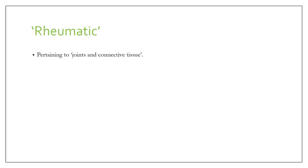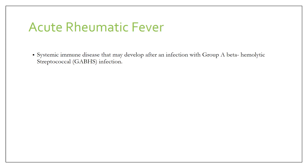The word 'rheumatic' is something which is related to joints and connective tissue — that you must be very clear — that is why the field of rheumatology uses that term. It is a systemic disorder, it is an immunologically mediated disease, and it occurs after an infection with group A beta-hemolytic streptococcus. These three things you must know by heart.